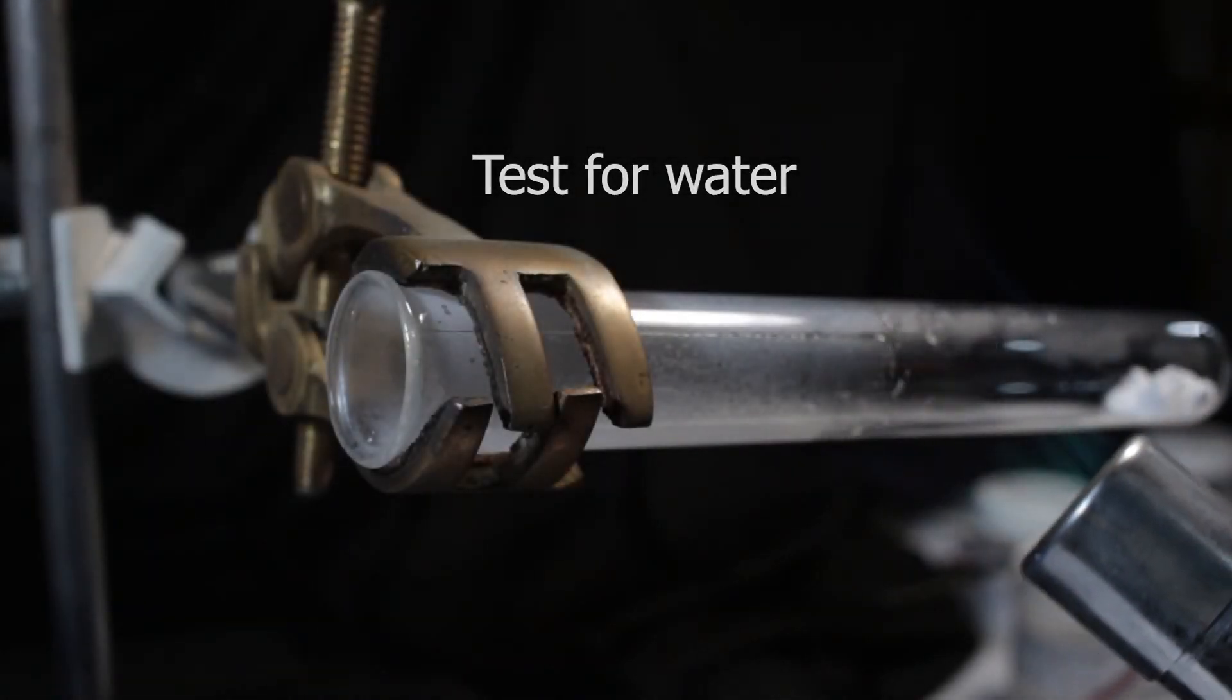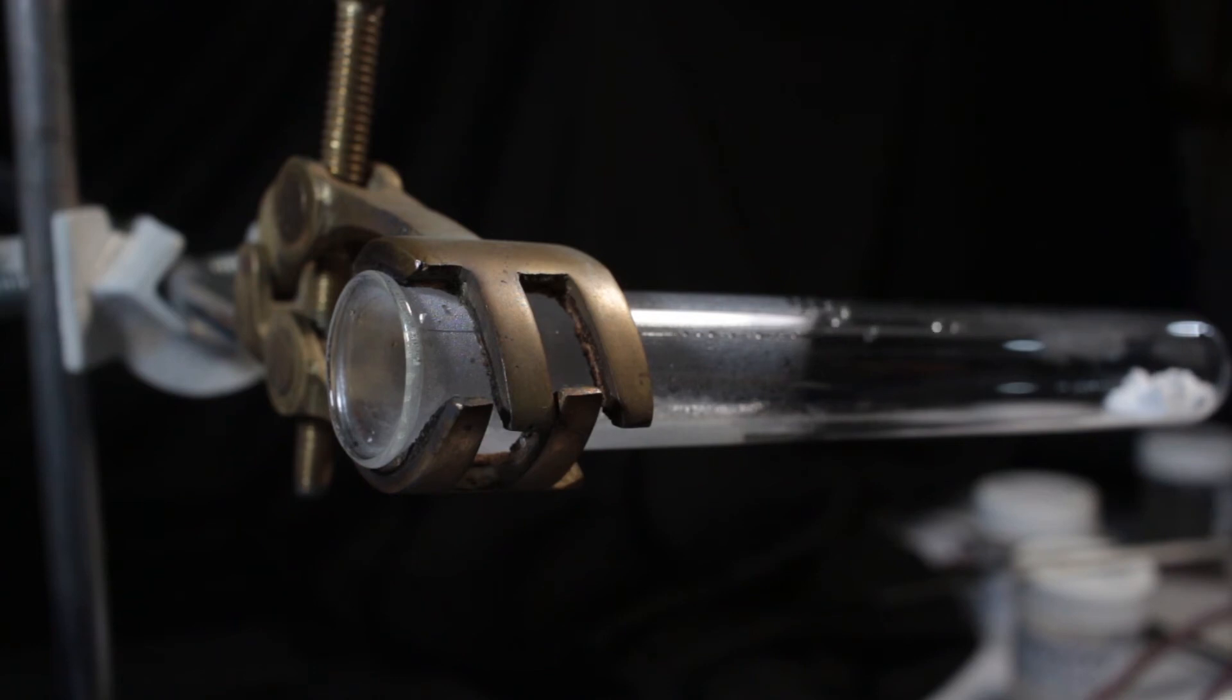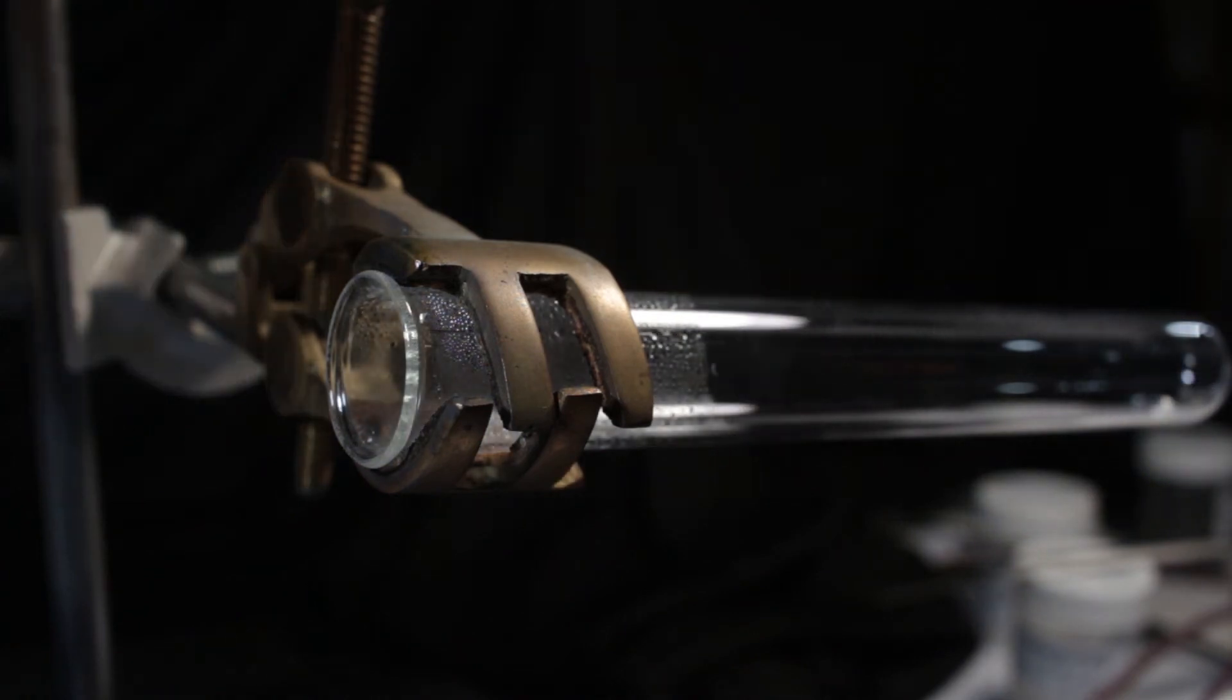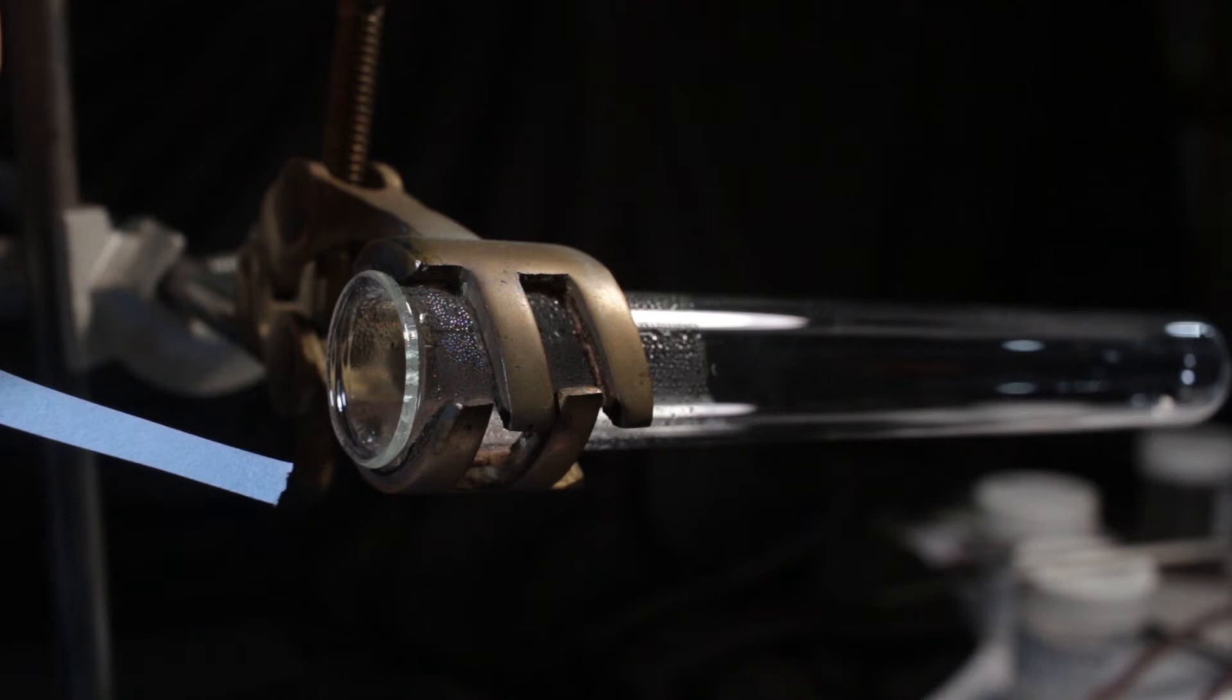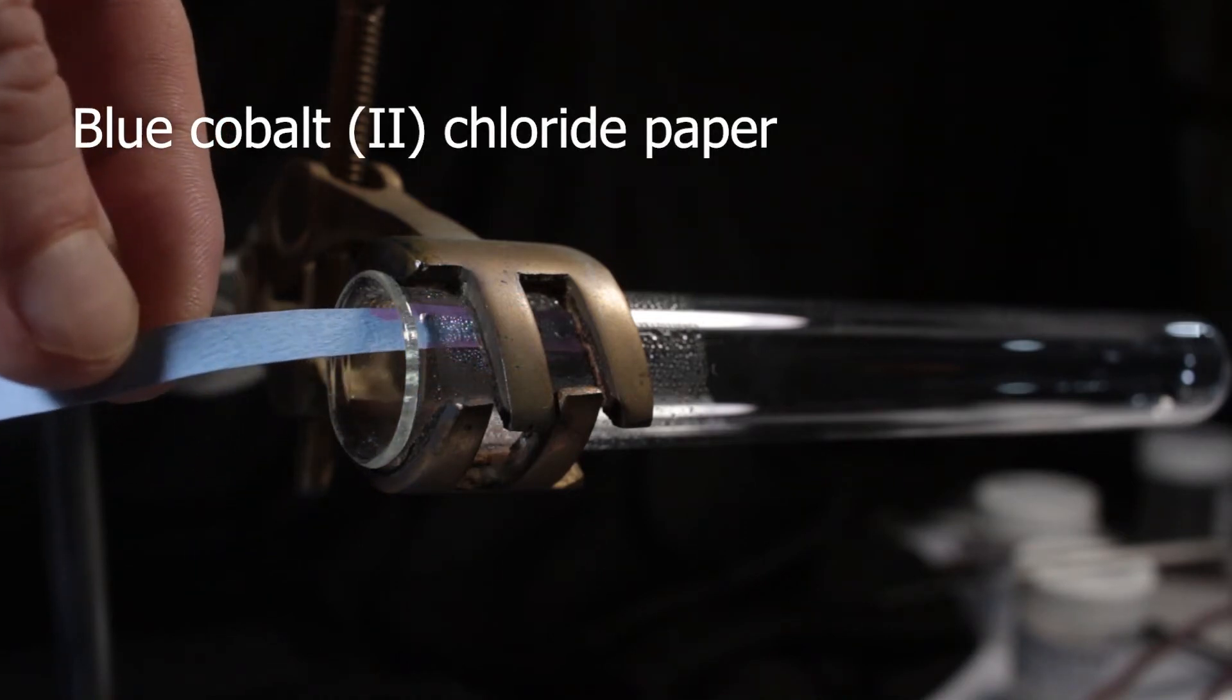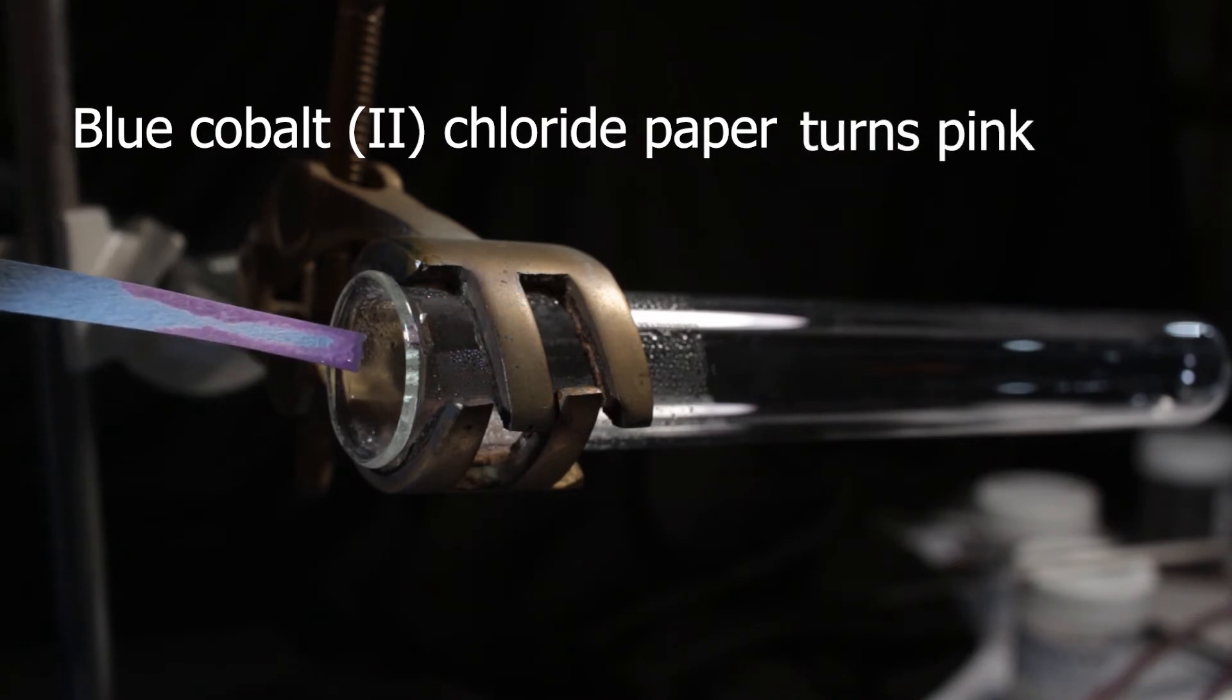Now it's turn for water. Let's drive this white liquid closer to the colder opening and test it with cobalt chloride paper. It's blue when it's anhydrous. As soon as water gets on it, it turns pink. Yes, presence of water is confirmed.